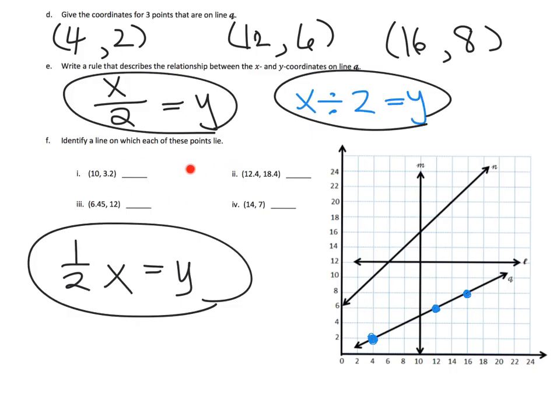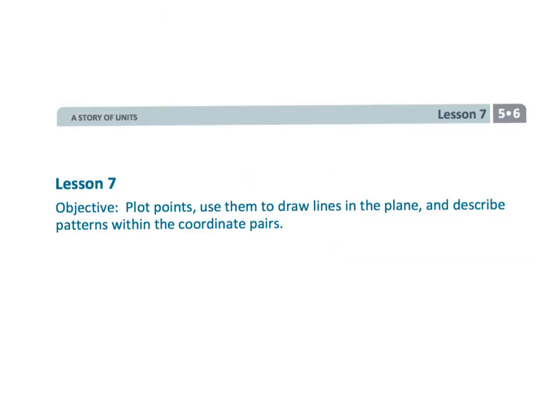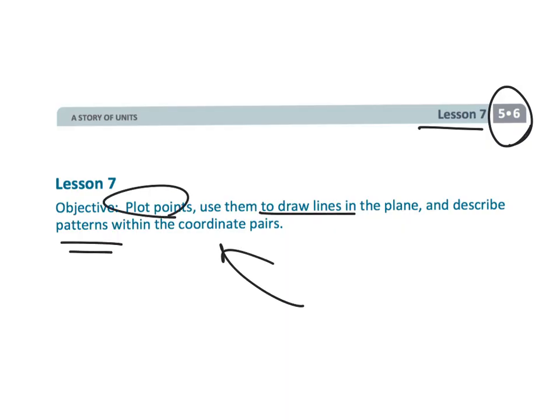You're also going to identify which line each given point lives on, and some estimation is perfectly fine. That wraps up fifth grade module six lesson seven — we've been plotting points, using lines, and looking for patterns within coordinate pairs.